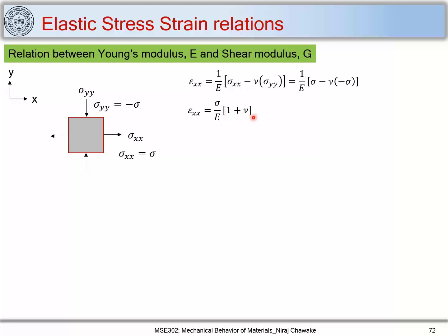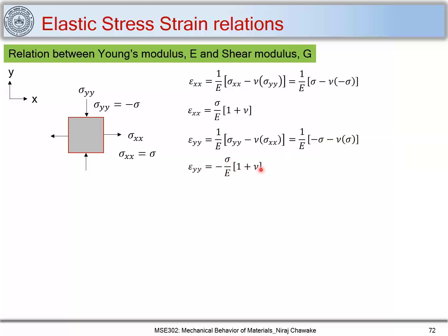Similarly, we find the normal strain along the y direction: epsilon_yy = (1/E)(sigma_yy - mu * sigma_xx). Substituting the values, epsilon_yy = -(sigma/E)(1 + mu). If we call the strain along x as epsilon, then the strain along y is minus epsilon.